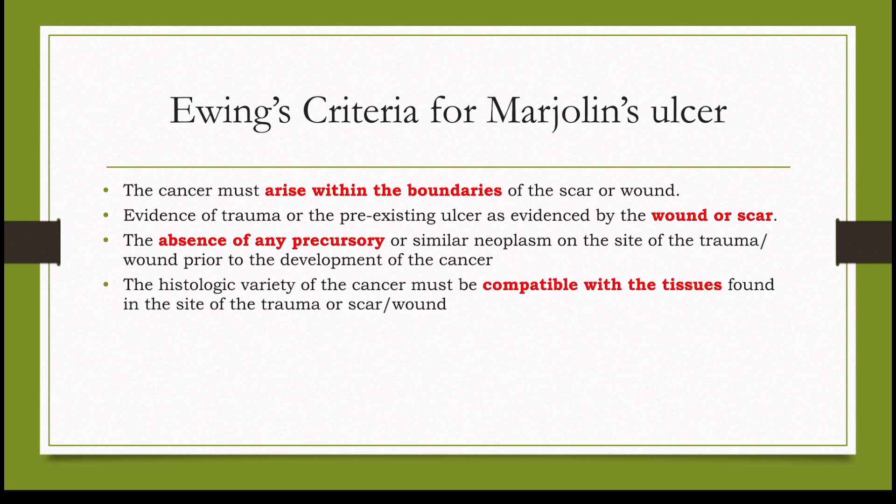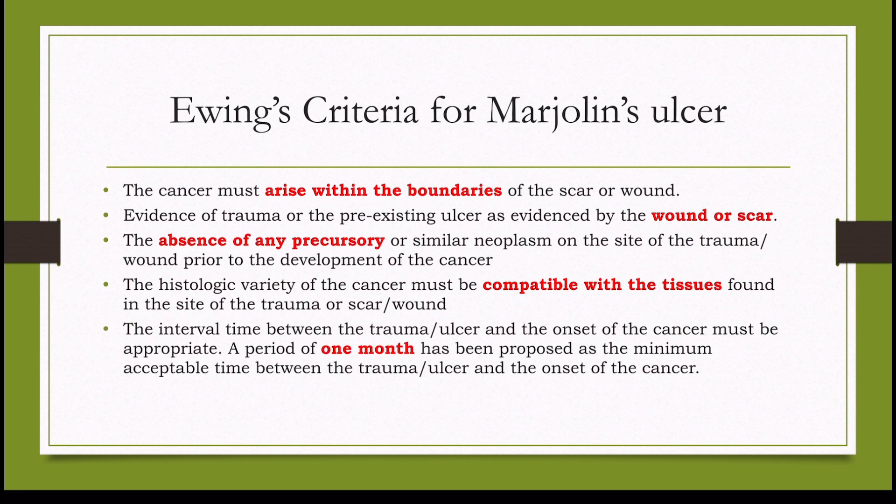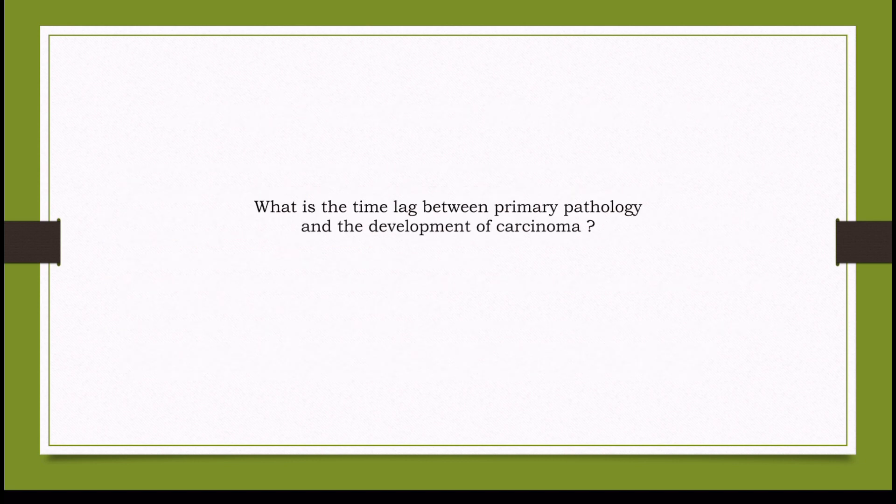Continuing Ewing's criteria: the histologic variety of the cancer must be compatible with the tissue found at the site of the trauma or scar wound. The interval time between the trauma or ulcer and the onset of cancer must be appropriate — a period of one month has been proposed as the minimum acceptable time between the trauma or ulcer and onset of cancer.